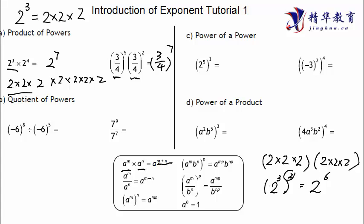You don't have to worry about the base not being the same because we only have one base. For example, 2 to the power of 5, to the power of 3, equals 2 to the power of 5 times 3, which is 15. Here's a tricky one: don't worry about the negative 3 — we're just focused on the powers. 2 to the power of 4, to the power of 2, to the power of negative 3: multiply 2 and 4 together to get 8. Power of power equals power multiply, so the result is the power of 8.